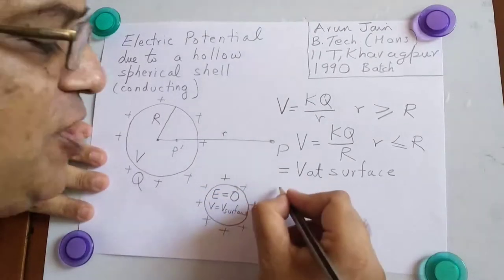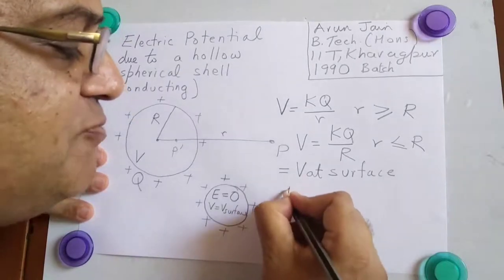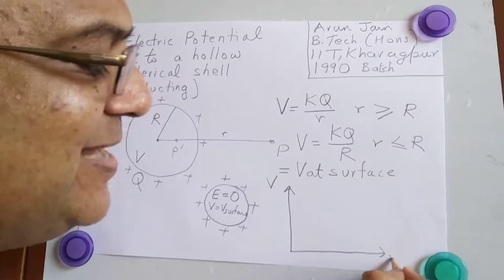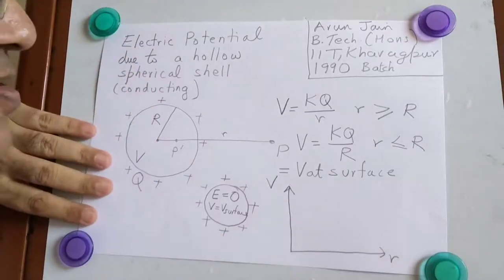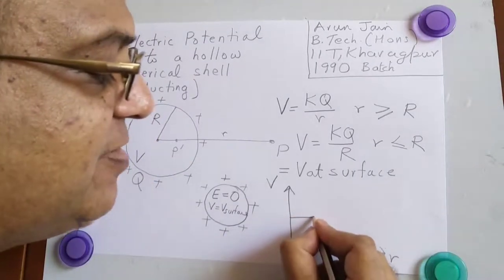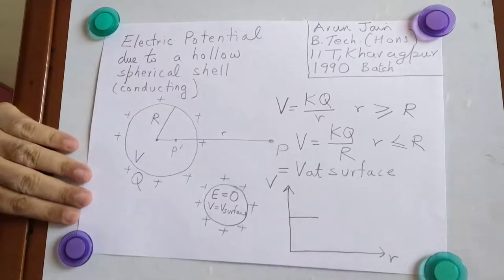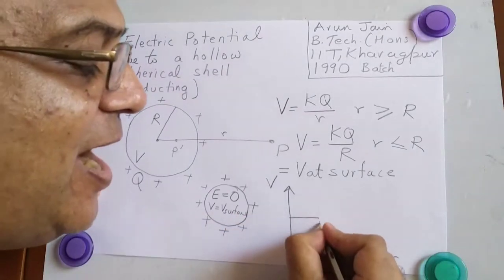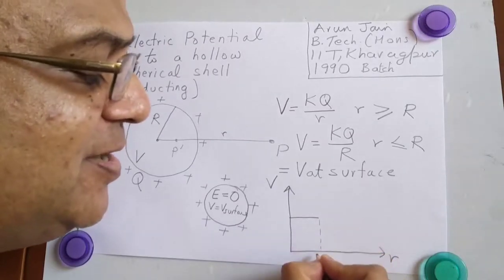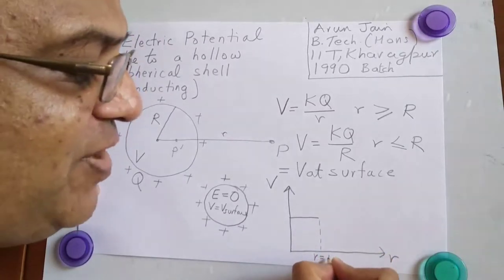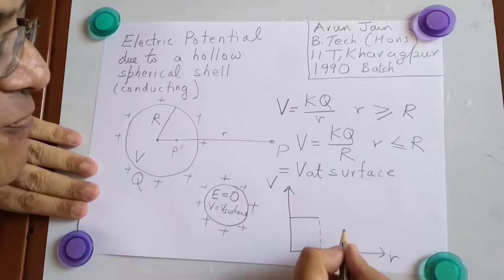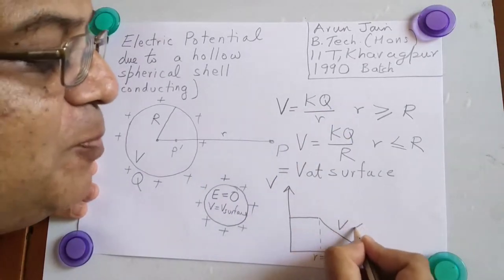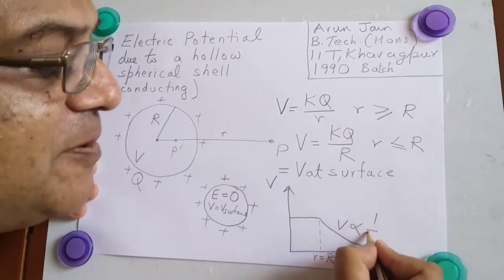If we plot the graph of V against R, inside the spherical shell potential is same as potential at surface. So we will have a horizontal line parallel to the R axis. At R equal to capital R, we reach the surface of the spherical shell. After that, it falls off as an inverse relationship. V is proportional to 1 by R.